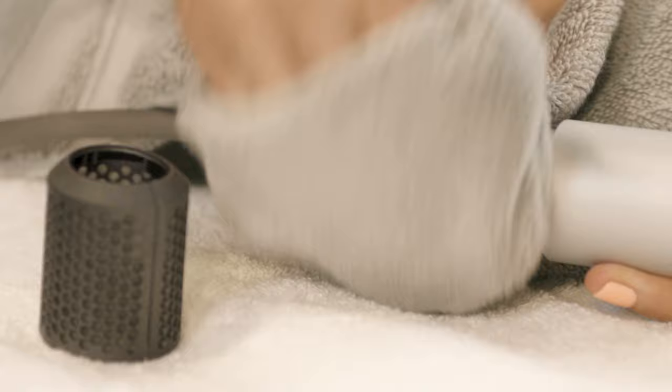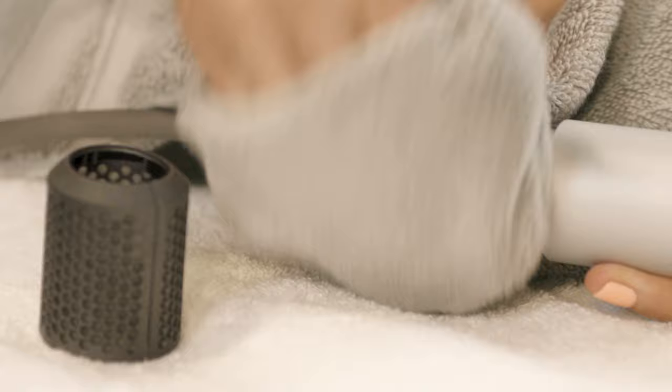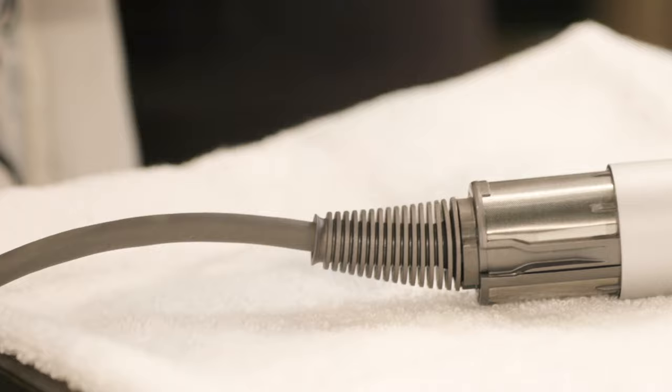Wipe down the filter with a clean, dry cloth. Soak the cage in dish soap and warm water for at least 30 minutes. You can use the spare filter cage that was included with your machine while your other filter cage soaks.